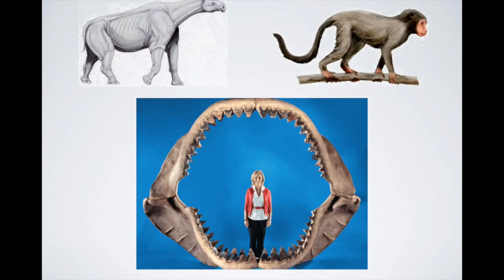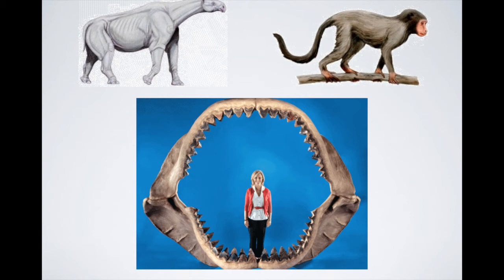The top left picture is a paraceratherium, the largest land mammal, which scientists likened to a hornless rhino. During this epoch there was growth of very large mammals — including elephants, which first evolved during this time. The top right is a drawing of a monkey, showing that monkeys first evolved in Africa during this period — representing a next step in human evolution. The bottom picture features the megalodon, the biggest shark in Earth's history, which also evolved during this time.